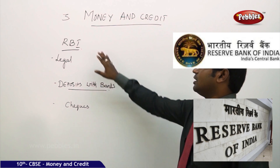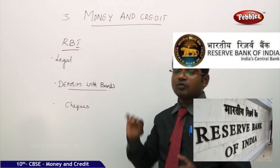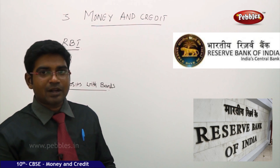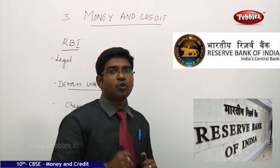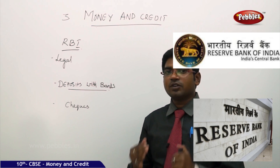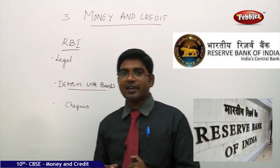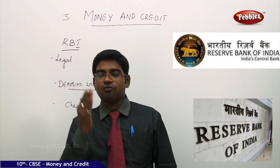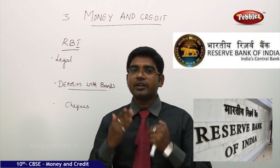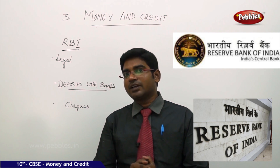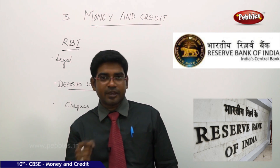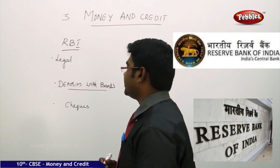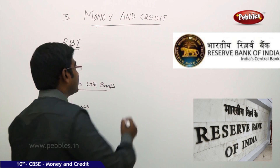Now, what is RBI? As we discussed in the previous part of the lesson, the rupee is recognized by the government of India as a valid currency. The body which guides the government of India to formulate the rules and regulations on the making of the currency is the RBI. RBI stands for Reserve Bank of India.